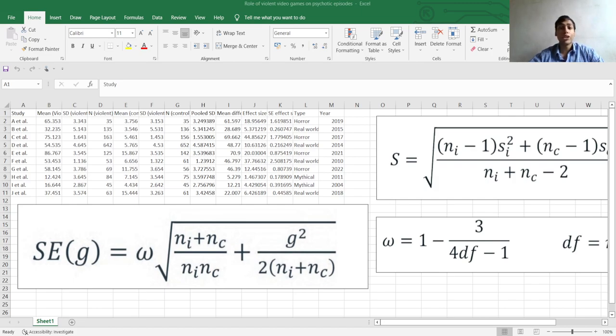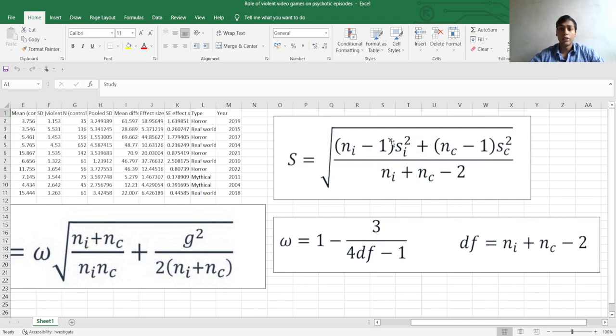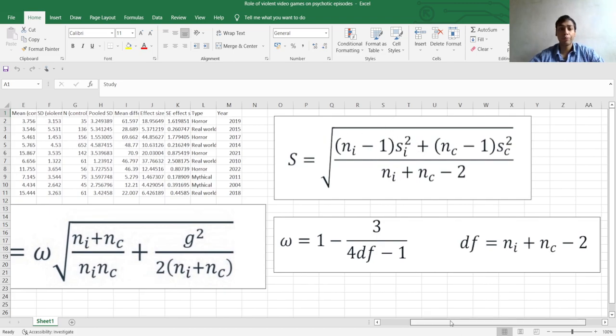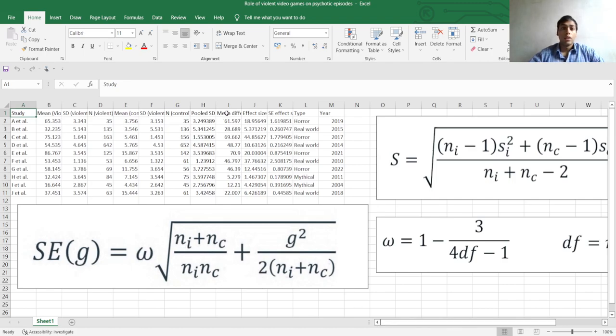The formula for the pooled standard deviation is as shown in this excel sheet which can be seen right here. This is the formula for the pooled standard deviation. And after we have calculated the pooled standard deviation by entering this formula into this cell as we can see here and after calculating the absolute mean differences between the mean number of violent episodes between the groups exposed to the games and the control group we can now proceed to calculate the effect size which is simply the mean absolute mean difference divided by the pooled standard deviation.